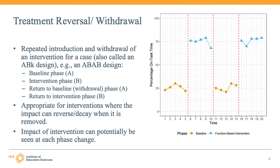The second note is that this design allows for as many phases as the researcher desires. A four-phase treatment reversal design is simply the smallest number of phases which allow for three opportunities to demonstrate an intervention effect. Many treatment reversal designs in the literature may therefore use more than the four phases shown in this simple example.